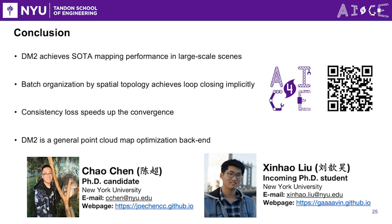In conclusion, our research has demonstrated remarkable advancement in mapping techniques for point cloud SLAM. First, we have successfully achieved state-of-the-art mapping performance in large-scale scenes. Second, the introduction of batch organization by spatial topology has significantly enhanced mapping capability by incorporating implicit loop closure. Furthermore, the implementation of consistency loss has played a critical role in speeding up convergence. Lastly, the current pipeline can be used as a generic learning-based map optimization method in the back-end of almost any point cloud SLAM method.